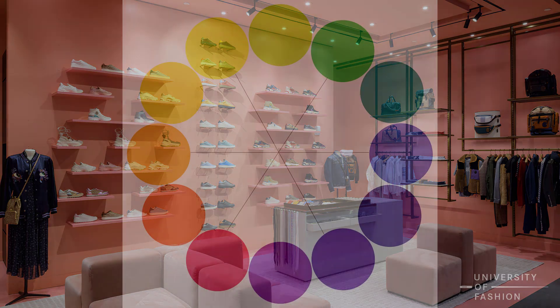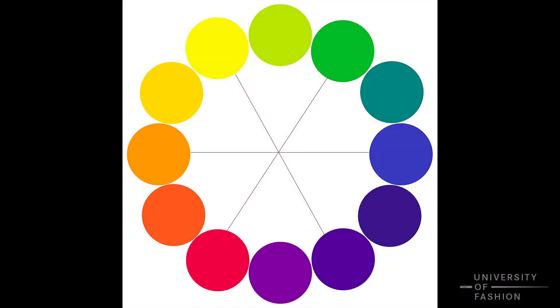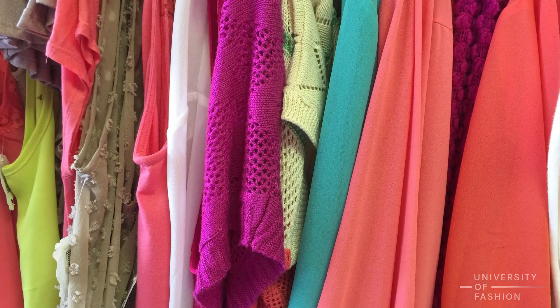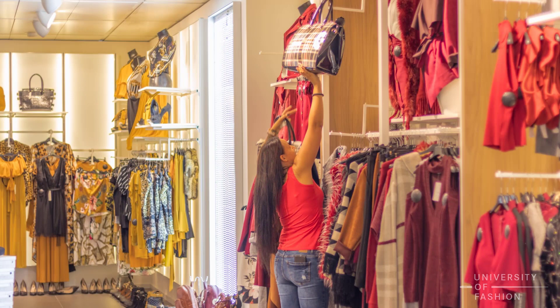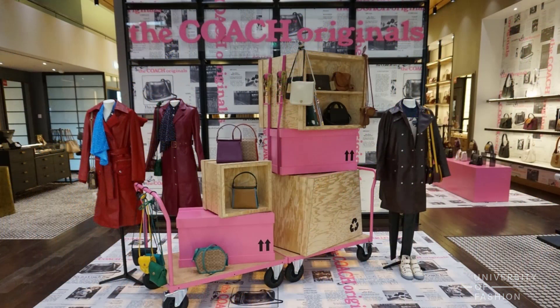Then we will move on to color relationships on the color wheel. Color relationships can guide us in putting colors together to create excitement and organization in the retail setting, both for the garments in the store as well as the interior design of the store itself.